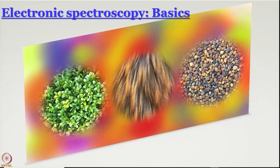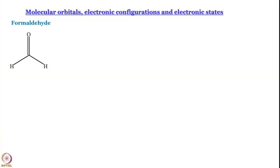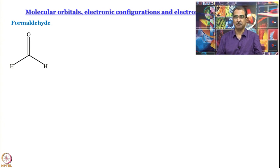Not completely, because it also involves ultraviolet colors that we cannot see, but colors nevertheless. Today we are going to develop the very basics of electronic spectroscopy that gives rise to this colorful world. At the very beginning, let us remind ourselves what molecular orbitals are. We know what electronic configurations are, but we will revisit that in the light of molecular orbitals. We want to state very clearly what electronic states are, because there seems to be some confusion about this many times. We are going to do this using a simple elegant example of formaldehyde.